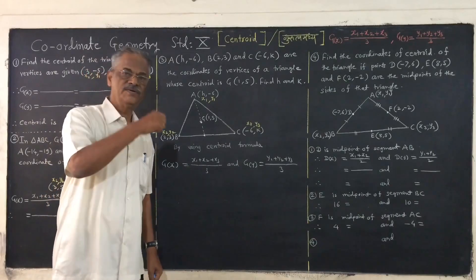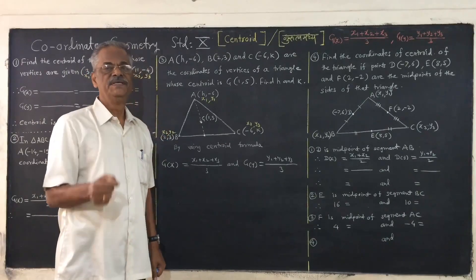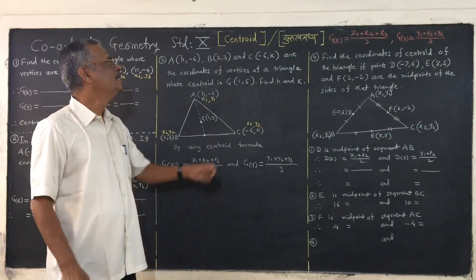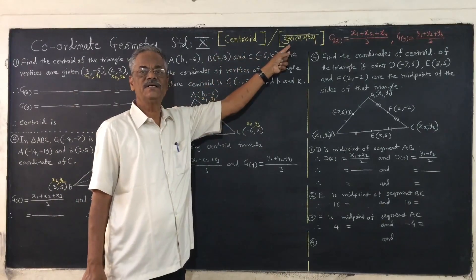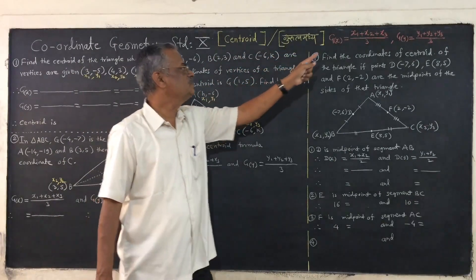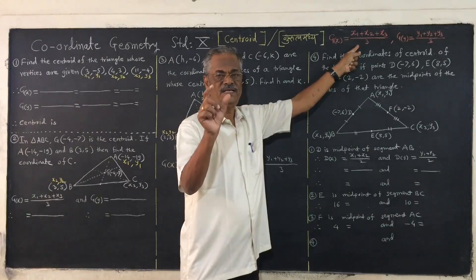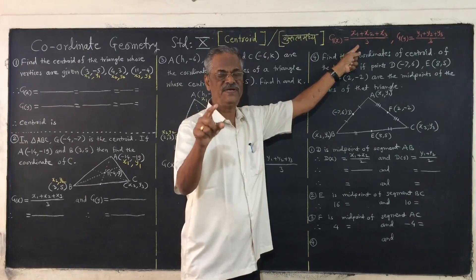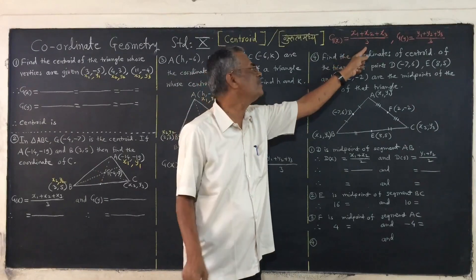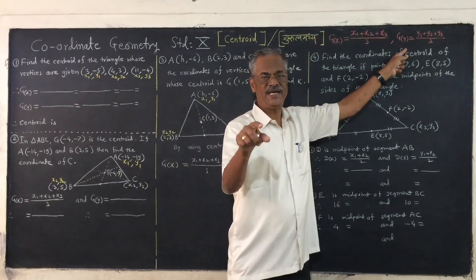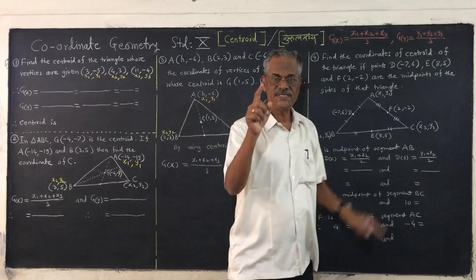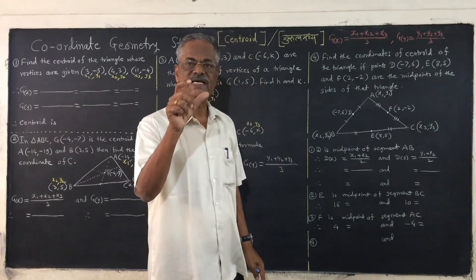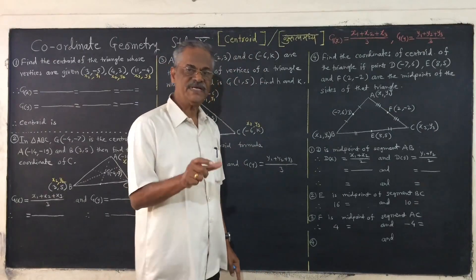In this video, we are looking at the centroid of a triangle formula. The centroid G has x-coordinate: x1 plus x2 plus x3 upon 3, and y-coordinate of centroid: y1 plus y2 plus y3 upon 3. We have already proved this formula, so now let us apply it.